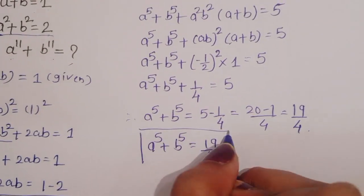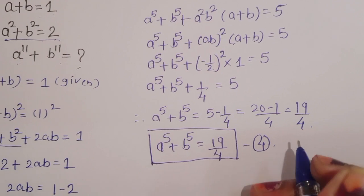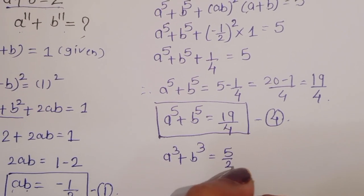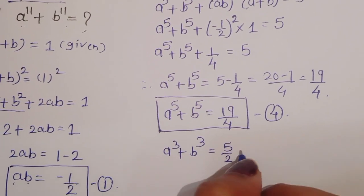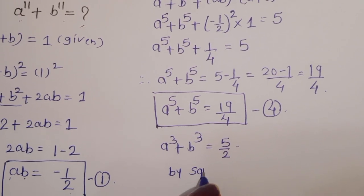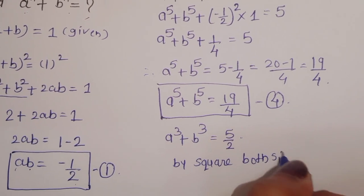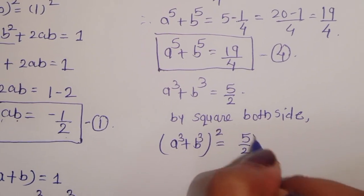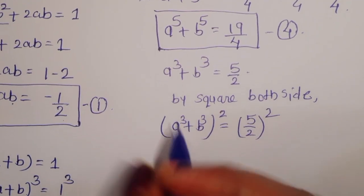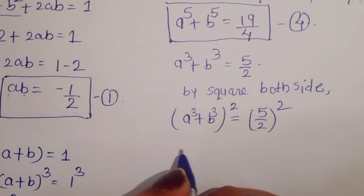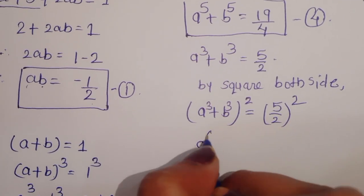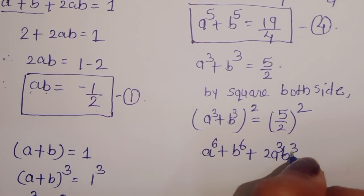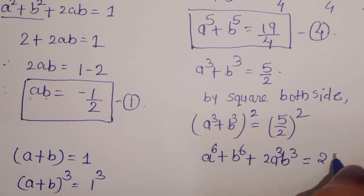This is equation 4. Now from equation 2, a power 3 plus b power 3 equals 5 upon 2. By squaring both sides we get a cube plus b cube whole square equals 5 upon 2 whole square. Expanding: a power 6 plus b power 6 plus 2 a cube b cube equals 25 upon 4.